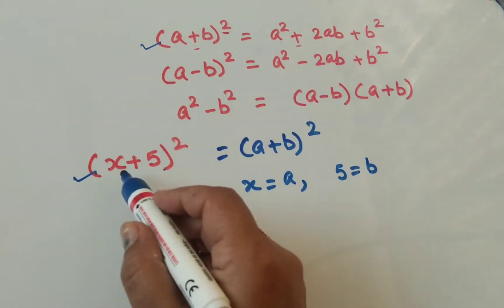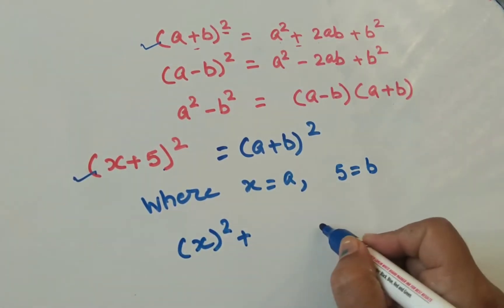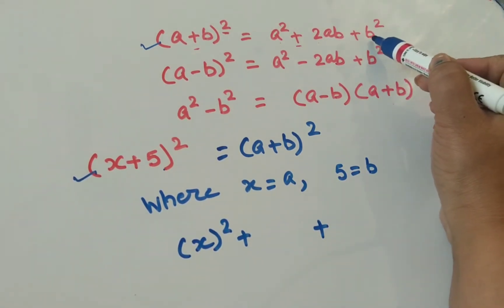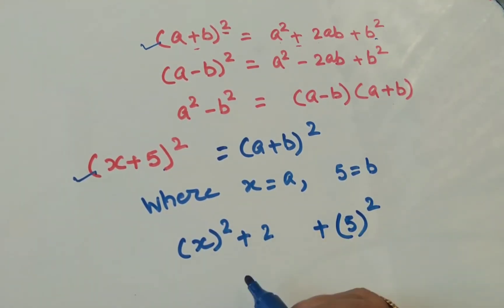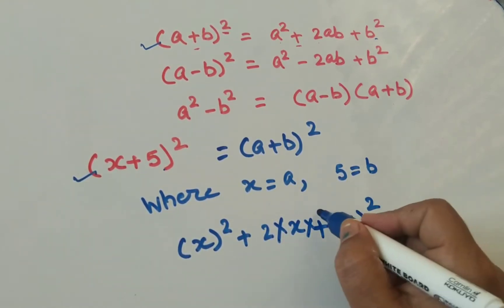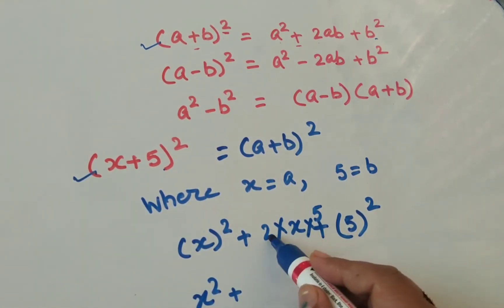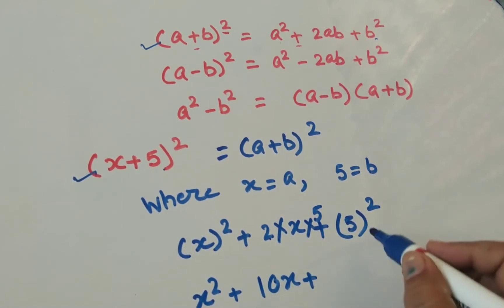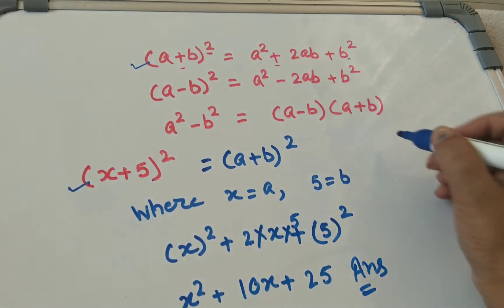For (x + 5) whole square, the formula gives us: a square — here a is x — so x square, plus b square — here b is 5 — so 5 whole square, plus 2 into a into b, which is 2 into x into 5. Opening it: x square plus 10x plus 25. This is your answer. Now let us see the converse of this question.